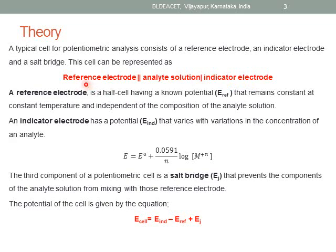In potentiometric analysis, the reference electrode should be taken as the anode. A reference electrode is a half cell having a known potential which remains constant at constant temperature and is independent of the composition of the analyte solution. Irrespective of the concentration of the analyte solution at a particular constant temperature, the electrode potential value of the reference electrode remains constant.